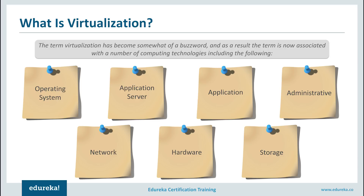Then there is application server virtualization, which is used for load balancing. Suppose I have a number of applications and a number of servers — I split those servers amongst the applications depending upon need. It prevents overloading of a particular server and also prevents underperformance of a particular application.